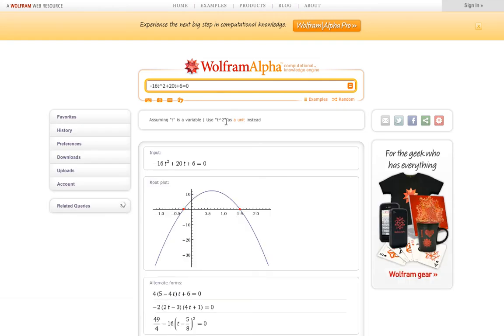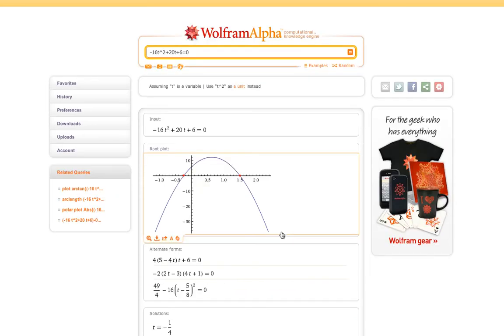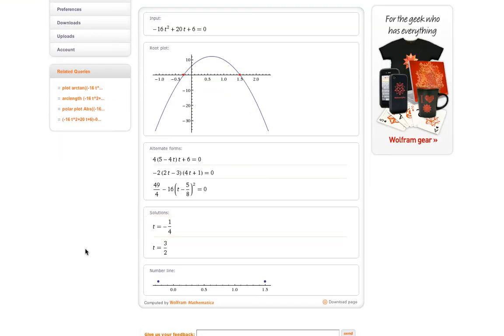And it says this is what that equation looks like. That agrees with the plot that we showed earlier. And if I scroll down, it says that my solutions are t is equal to minus 1 fourth, and t is equal to 3 halves.